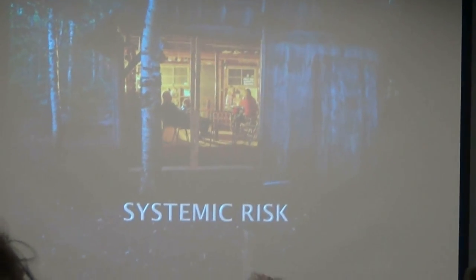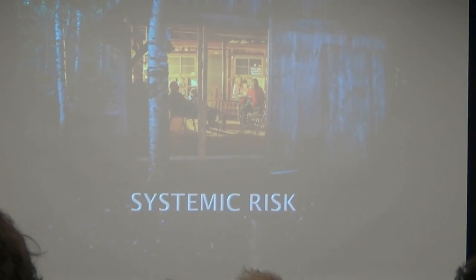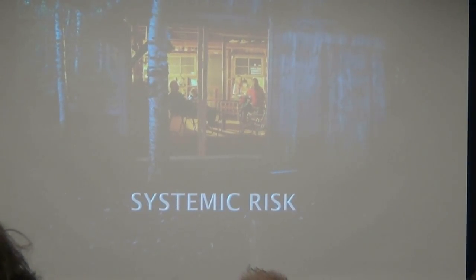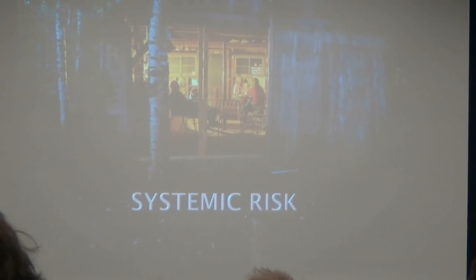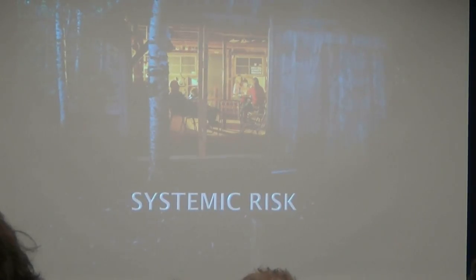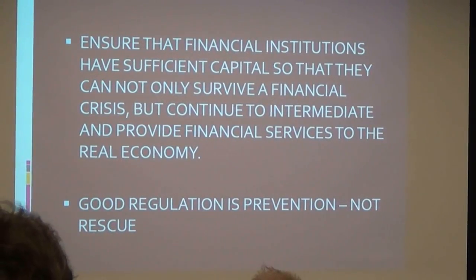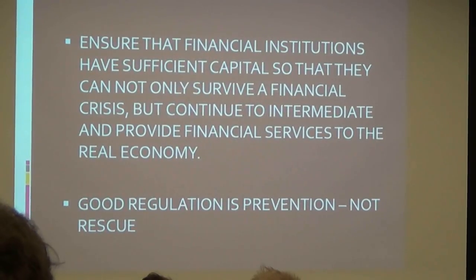That's topic two. Now I want to do one more thing — I want to look at systemic risk, the risk in the banking system around the world, and talk about what recent events might have done to this. The regulatory challenge from Dodd-Frank, but really long before that, is to ensure that financial institutions have sufficient capital so they can not only survive a financial crisis, but continue to intermediate and provide financial services to the real economy. Good regulation is prevention, not rescue.